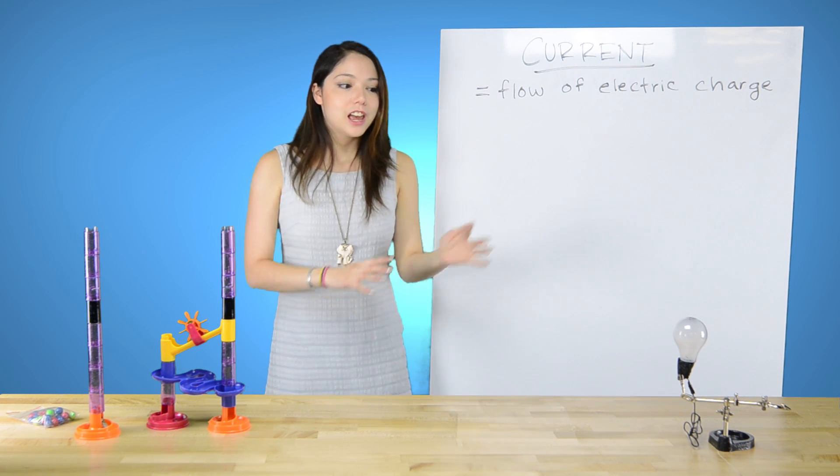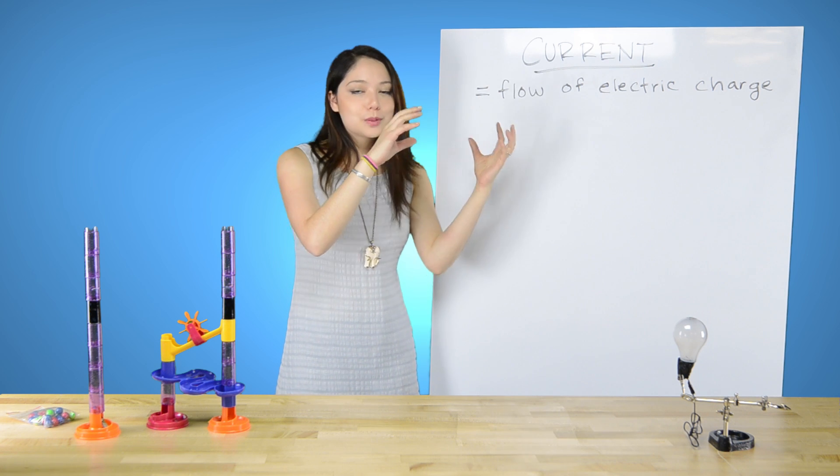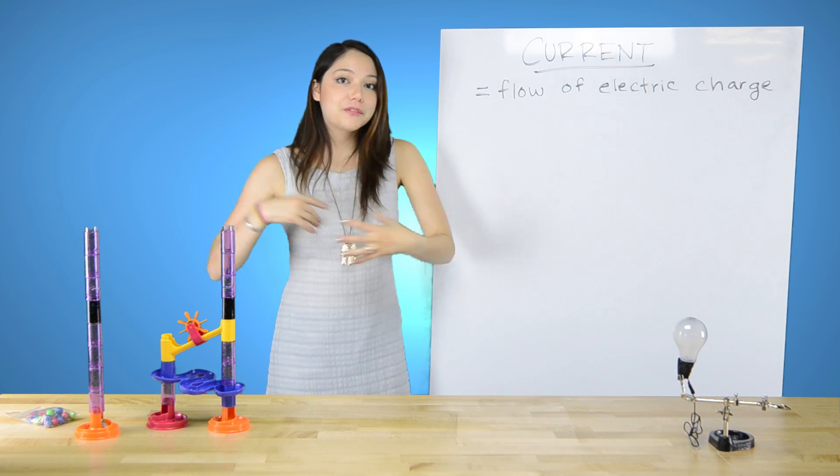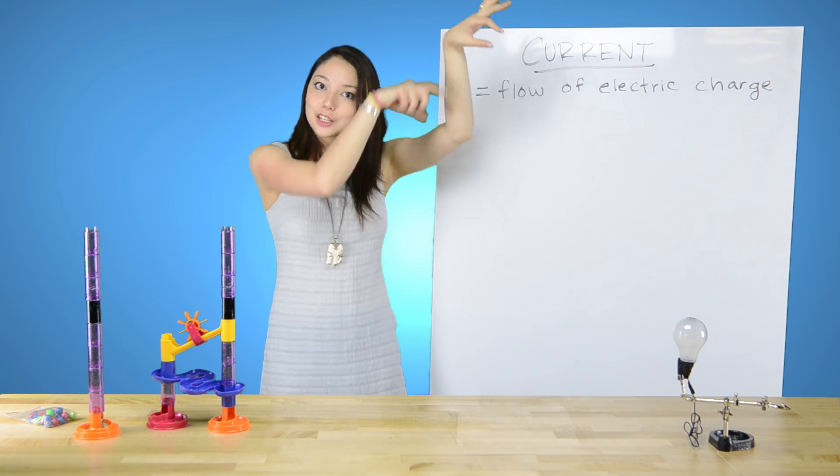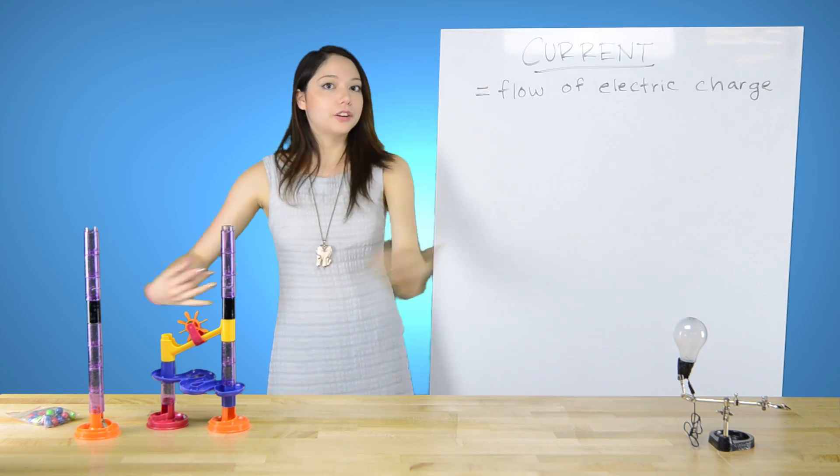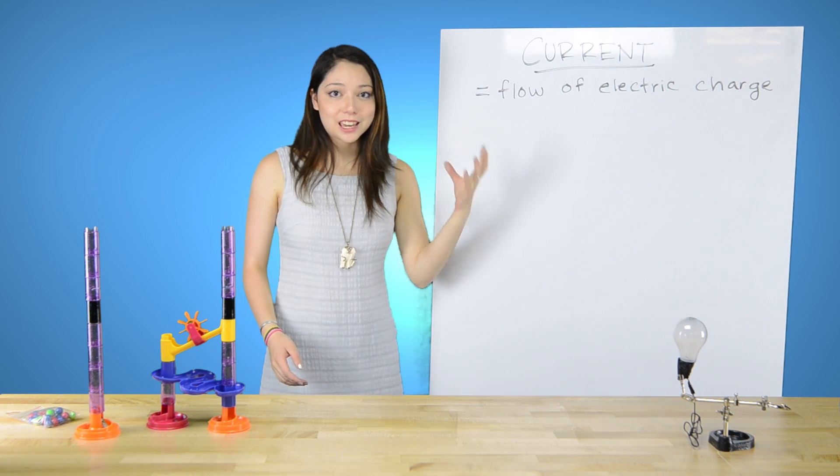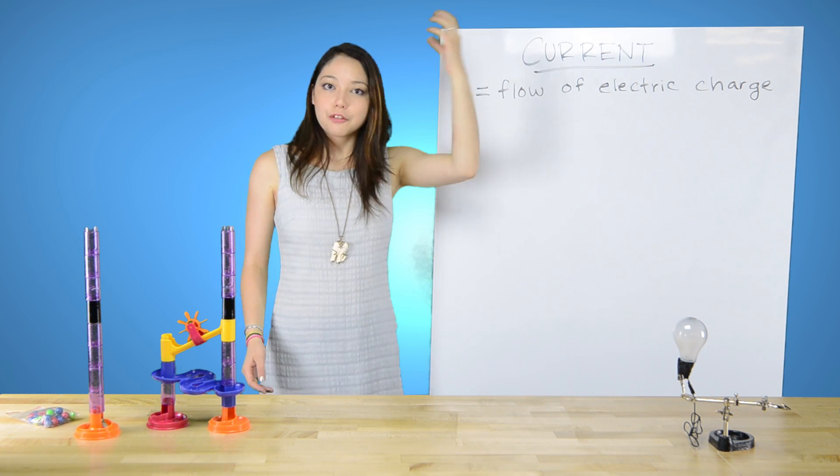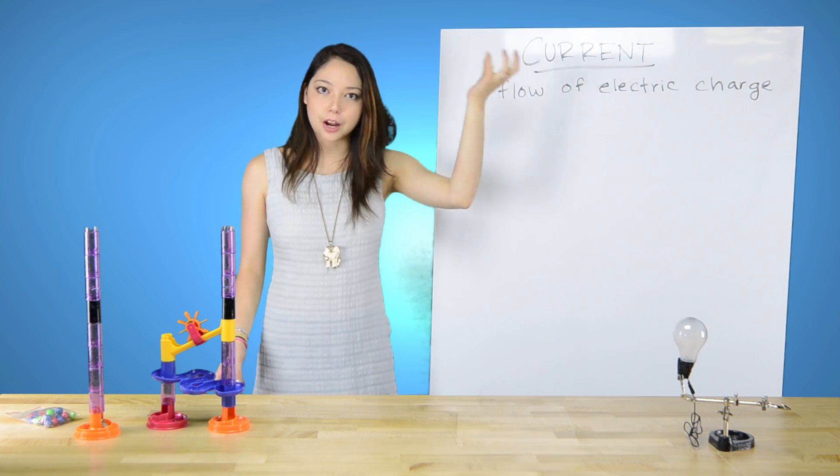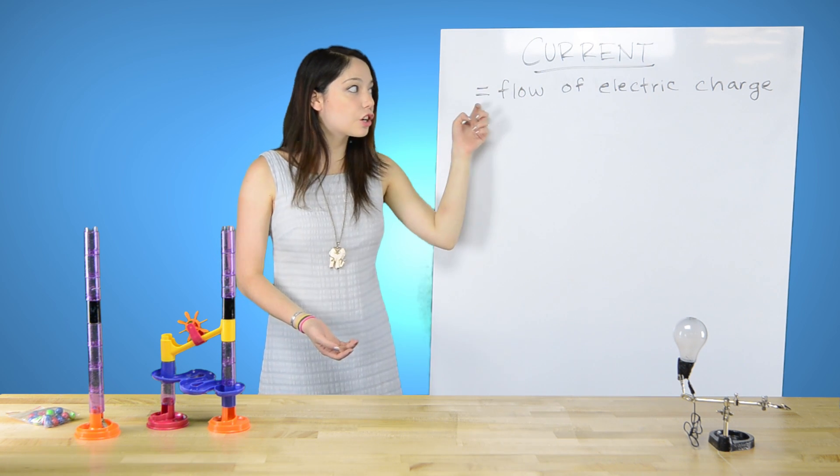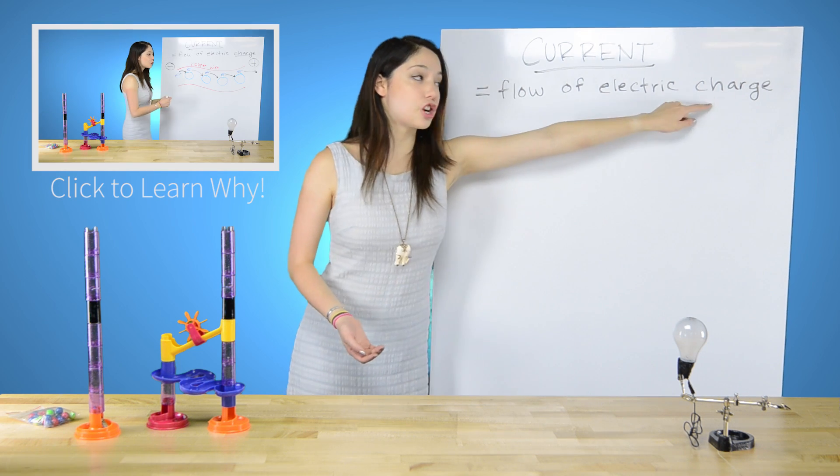So the current of a river is how fast water is moving from the top of the river to the bottom of the river, from the lake to the ocean or from wherever the river is coming and going and you have all the water flow in the middle. Current in electricity, electrical current, is the same thing. It is the flow of electric charge from point A to point B, most frequently from the positive end of the battery to the negative end of the battery. So that is current, the flow of electric charge.